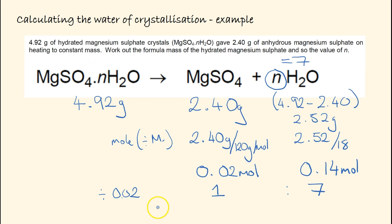So our molecular formula is MgSO4·7H2O, with N equal to 7.